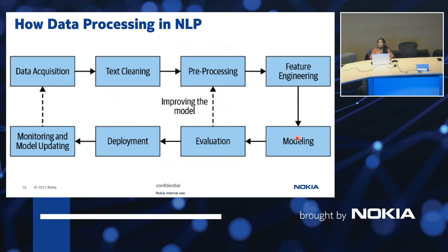Next is modeling, where we choose the appropriate model as per our requirement. Once the model is chosen, we evaluate it. If the model is not proper, we improve it by cycling back through preprocessing, feature engineering, and model selection until we get an appropriate model. Once the evaluation is proper, we deploy the model, then monitor and update it. This is how data processing happens in NLP.